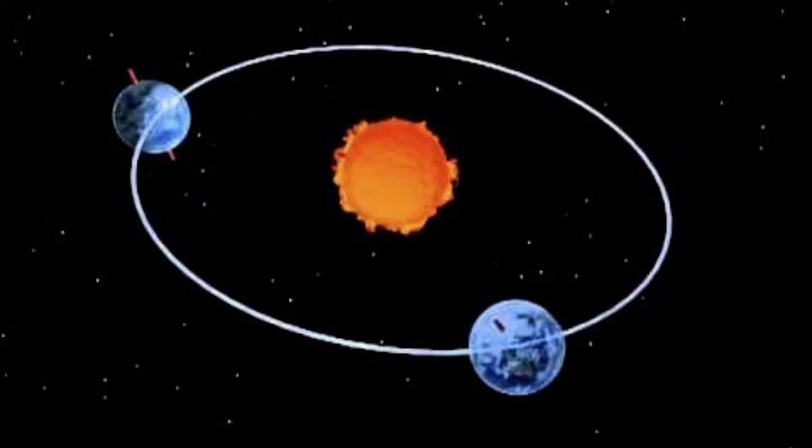The North and South Poles receive the least amount of direct sunlight. They are the polar regions of Earth. Generally, they remain cold and dry. In recent years, however, as Earth's overall climate has changed and has become warmer, the polar regions are warming up too and some of the ice caps in this region have been melting.